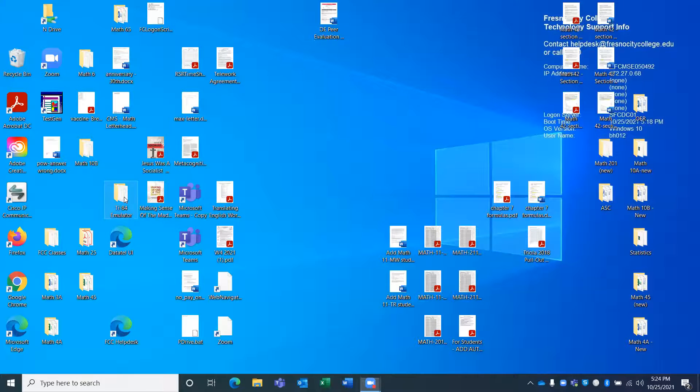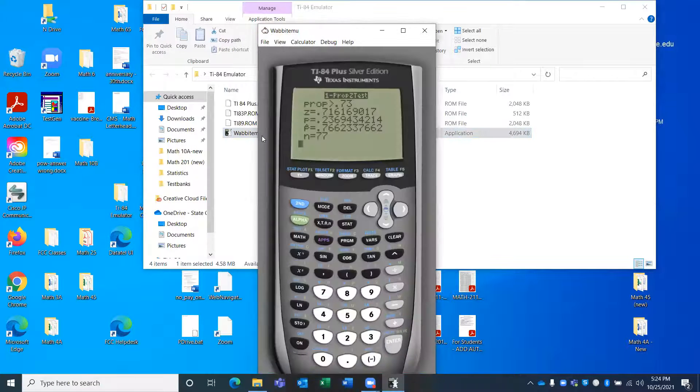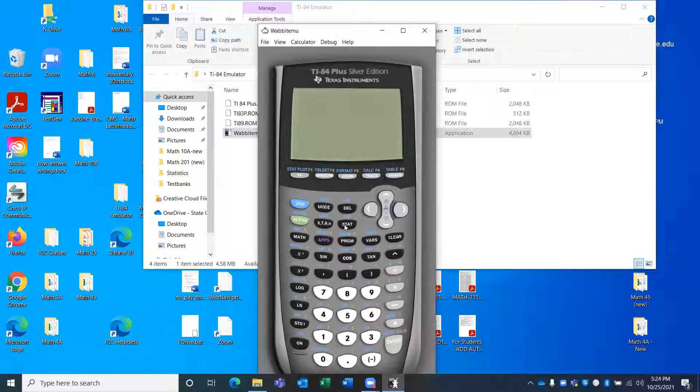Let me open up my emulator. Okay, so here's my calculator. I'm going to go through the button, stat. I'm on edit. Hit enter. I'm going to go up to the top, and so I went up to L1. See how I can move with the arrows? To clear out L1, I've got to go up to the top, press clear, and enter.